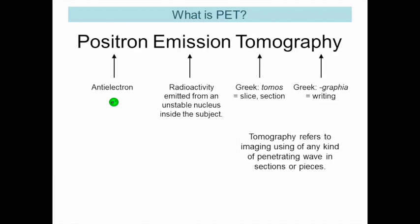So, what is PET? In PET, we're looking at positrons. Positrons are an anti-electron — it has the same mass as an electron, but a positive charge instead of a negative charge. We're looking at emission, which means that the radioactivity is emitted from an unstable nucleus inside a subject. And all of this is recorded with tomography, which comes from the Greek word tomos meaning slice or section, and graphia meaning writing. It really refers to a general imaging acquisition that uses penetrating waves to get sections of the subject you're looking at.